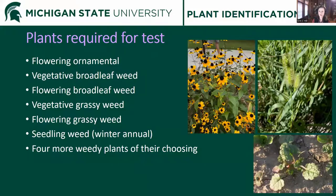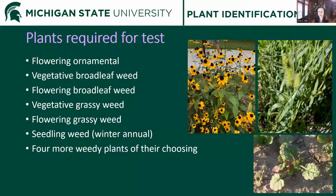Student groups were supposed to compare their apps for 10 different plants, but I didn't let them choose any plant they wanted — I wanted to test the versatility of these apps. Every group had to photograph a flowering ornamental like Black Eyed Susan, a vegetative broadleaf weed, a flowering broadleaf weed, a vegetative grassy weed, a flowering grassy weed, and a seedling weed. We did this in late September, so seedling weeds were mostly winter annual species like Henbit. The last four plants were at their discretion from our class list of 105 weeds.